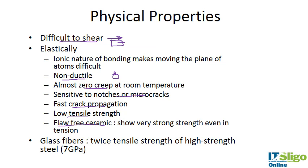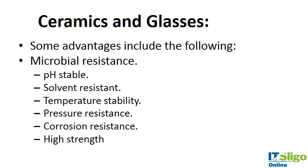However, if one can achieve a flaw-free ceramic with no micro cracks, they show very strong strength even in tension. That is the ideal situation — a flaw-free ceramic is unable to deform and is difficult to shear. Glass fibers, for example, have twice the tensile strength of high-strength steel, so ceramics do have some very nice mechanical properties.